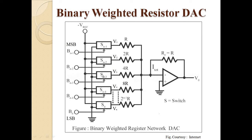The digital signal to be converted is provided using these bits, which act as switches between reference voltage and ground. When the bit is high, the reference voltage flows through the circuit into the summing operational amplifier. The feedback resistor R_f is equal to the resistor R used in the circuit. Each line has a resistor, but with values R, 2R, 4R, 8R, and so on. For n bits, we need resistors up to 2^(n-1) × R.